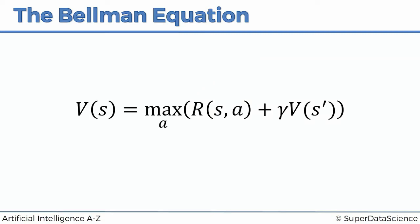So the Bellman equation looks something like this. We've already talked about V — the value of being in a certain state. S is your current state, or any given state. And S prime is the following state — the state you will end up in after this state by taking a certain action. By taking action A in state S, what will happen is you'll instantly get a reward by getting into the new state. That reward can be plus one or minus one at the end of the game, or zero if it's throughout the game — in this maze, the reward throughout the game is zero.